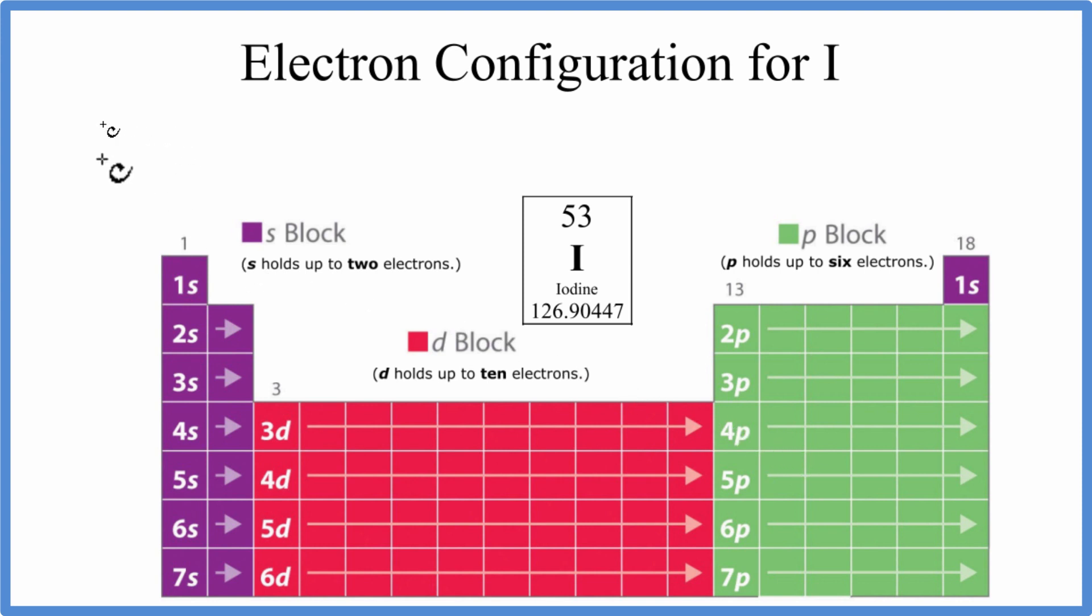We'll start with iodine and we use 1s1. s can hold up to 2. So we have 1s1, 1s2. Then we go over to 2s1, 2s2. We've used 4 electrons.